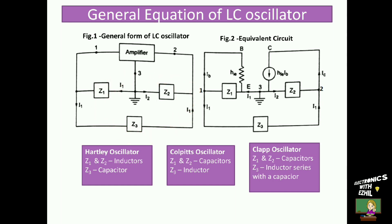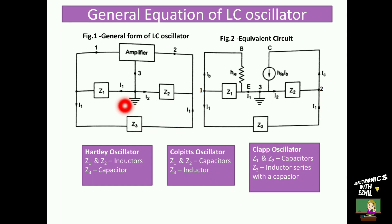Depending upon the type of reactances used in the feedback network, LC oscillators are classified into the Hartley oscillator, Colpitts oscillator, and Clapp oscillator. If Z1 and Z2 are inductors and Z3 is a capacitor, the oscillator is called a Hartley oscillator. In the Colpitts oscillator, Z1 and Z2 are capacitors and Z3 is an inductor. In the Clapp oscillator, Z1 and Z2 are capacitors and Z3 is an inductor in series with a capacitor.